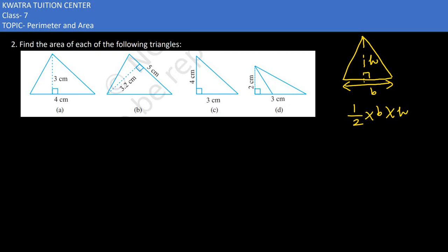Half, base, height, and multiply it. In this part, what will we get the result? Half into b into h. Where we substitute b as 4 and h as 3, we get half times 4 times 3, which would be 6 centimeter square.